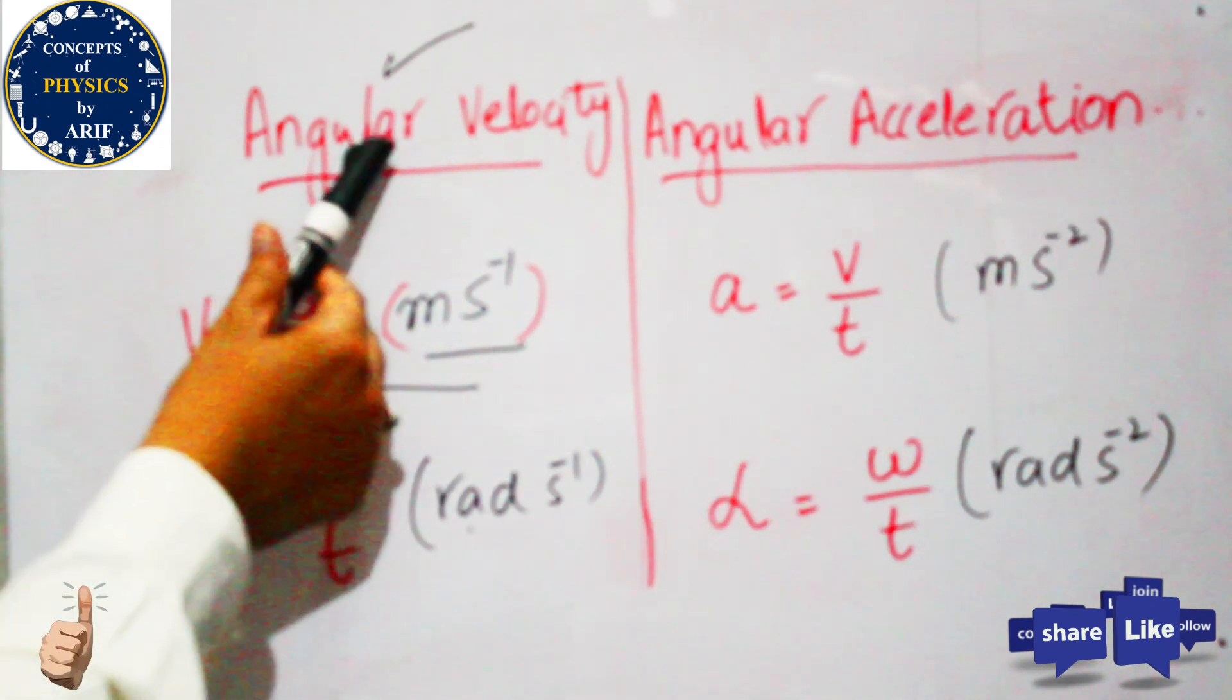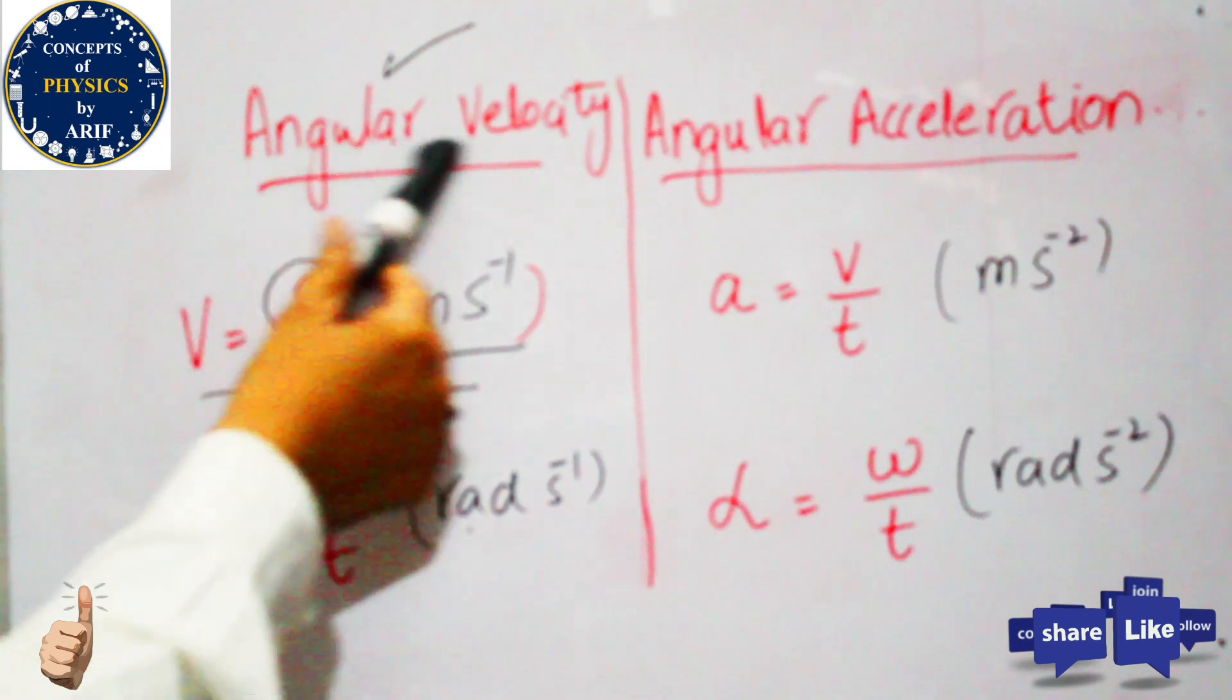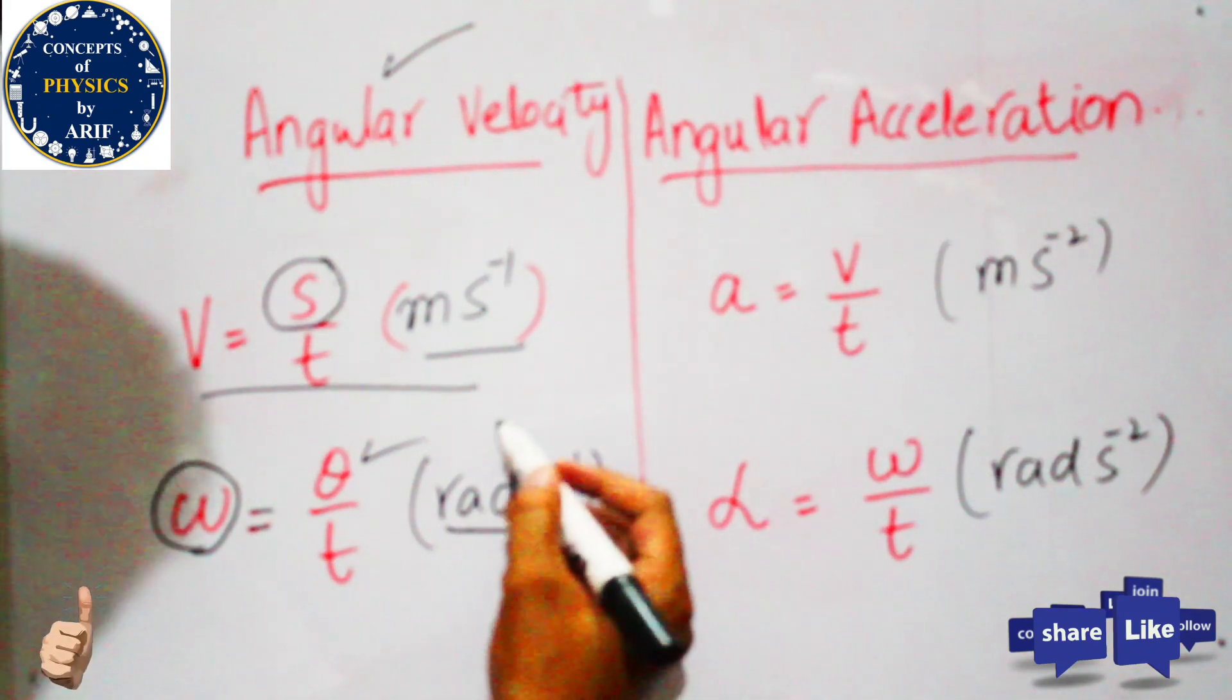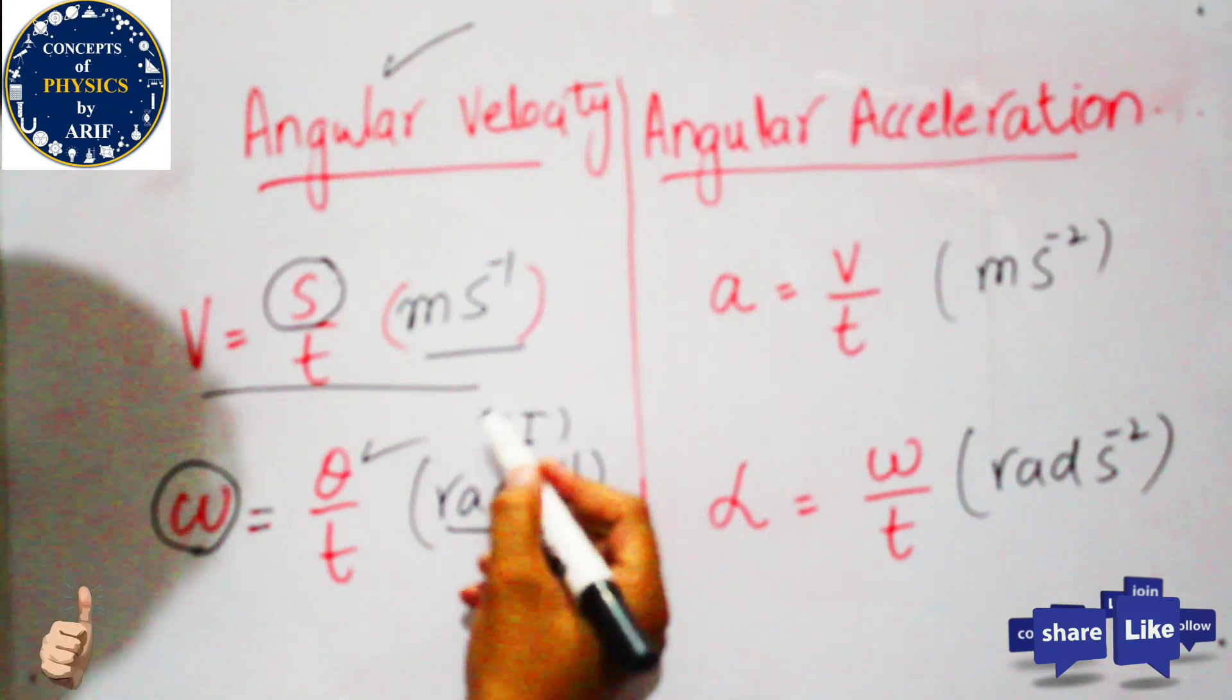If we talk about angular velocity, it is denoted as omega. Time rate of change of angular displacement is known as angular velocity, and its SI unit is radian per second.